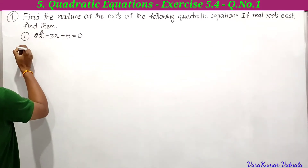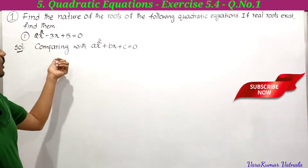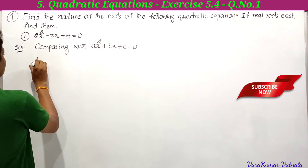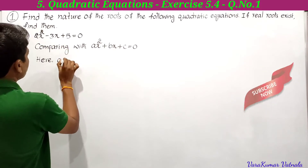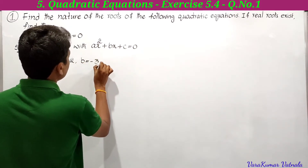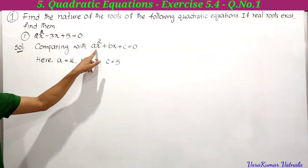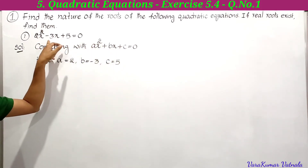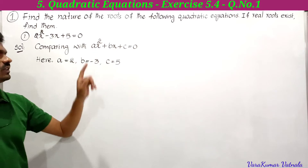Comparing 2x² - 3x + 5 = 0 with ax² + bx + c = 0: the x² coefficient is 2, so a = 2; the x coefficient is -3, so b = -3; the constant is 5, so c = 5.